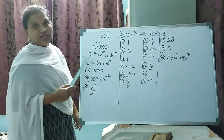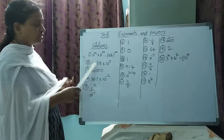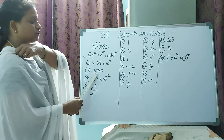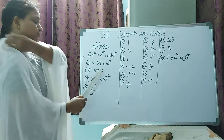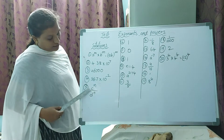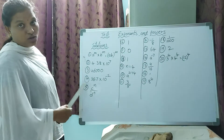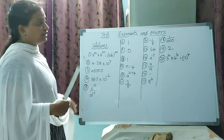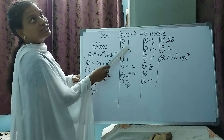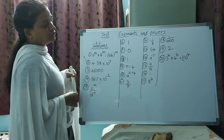Next, here they asked you to find the answer in standard form, so we wrote the standard form. Next one is also in usual form, then standard form. Next: c power n divided by d power n — this is also one exponent law.